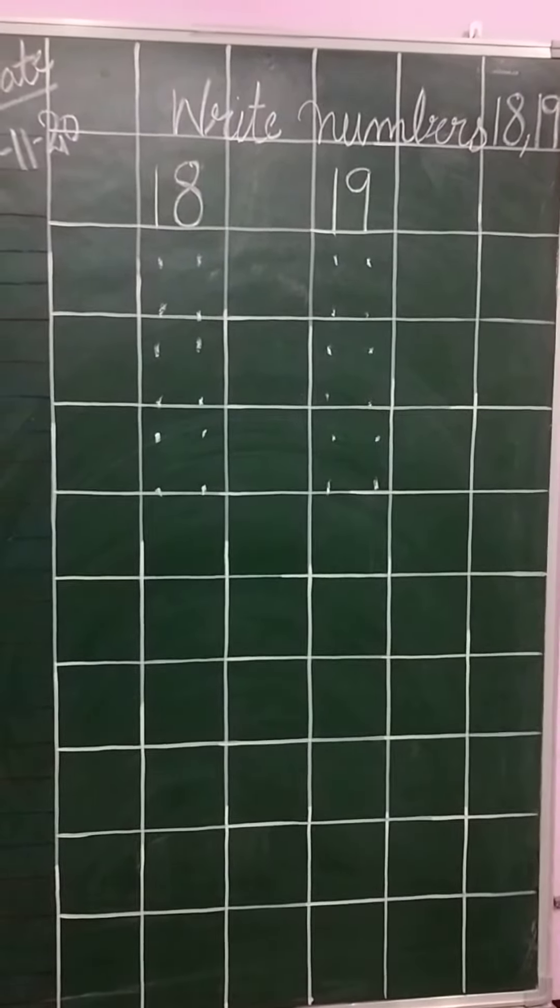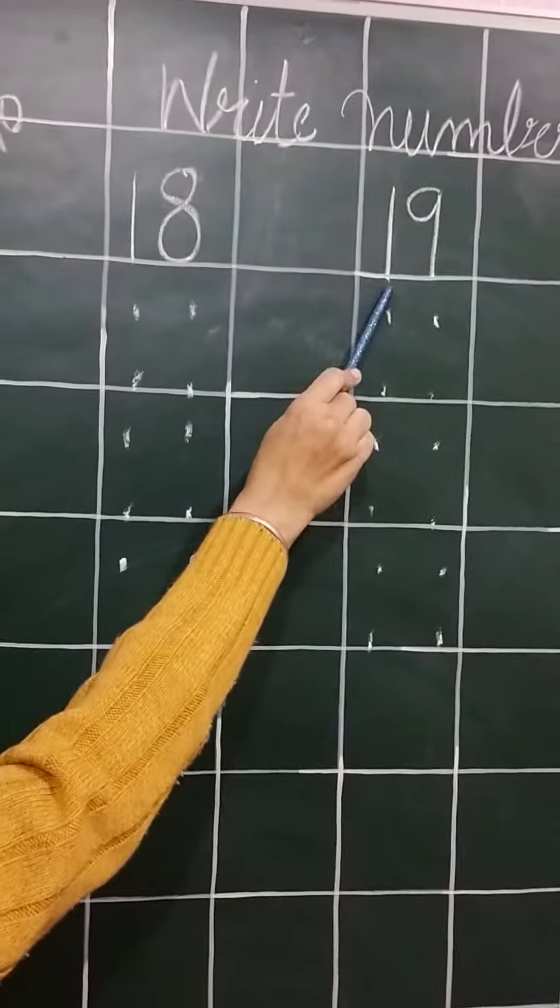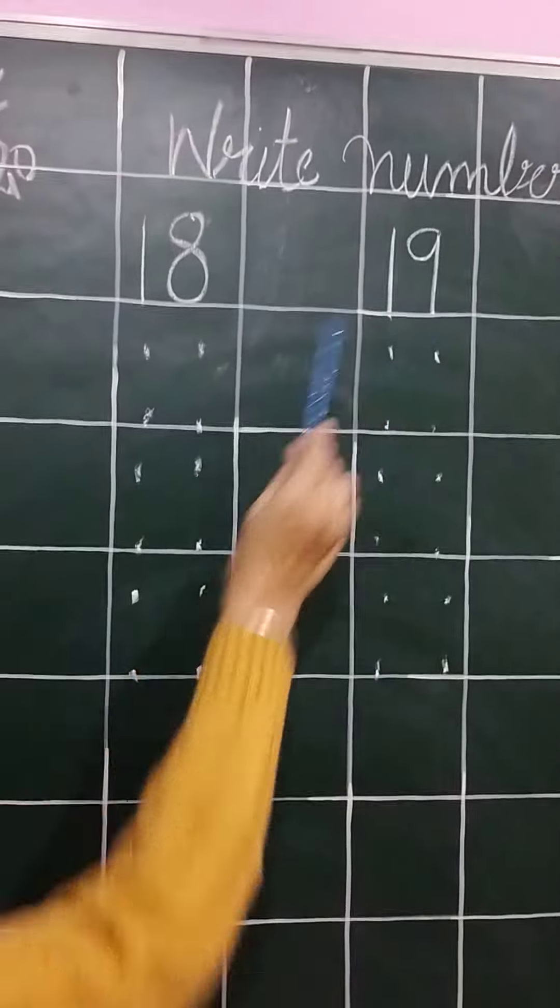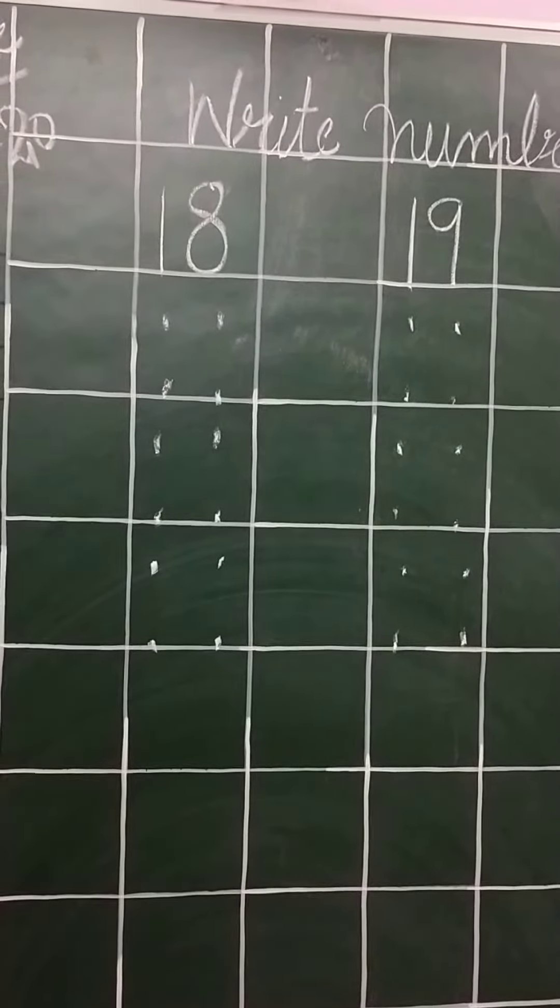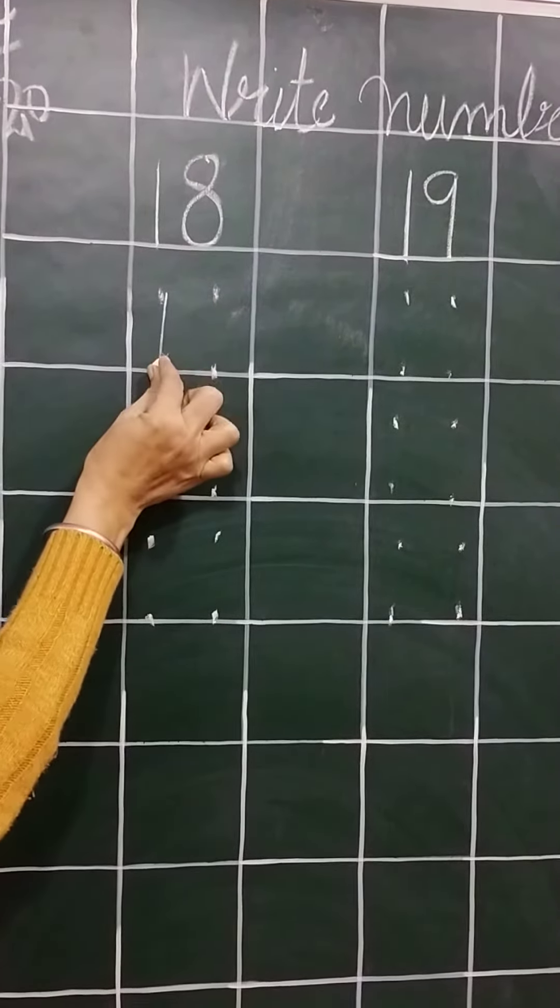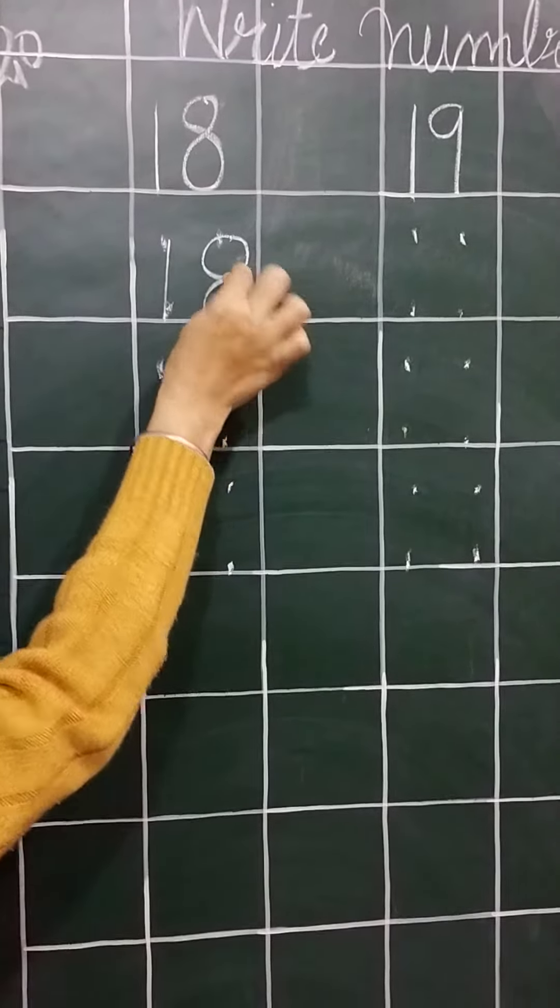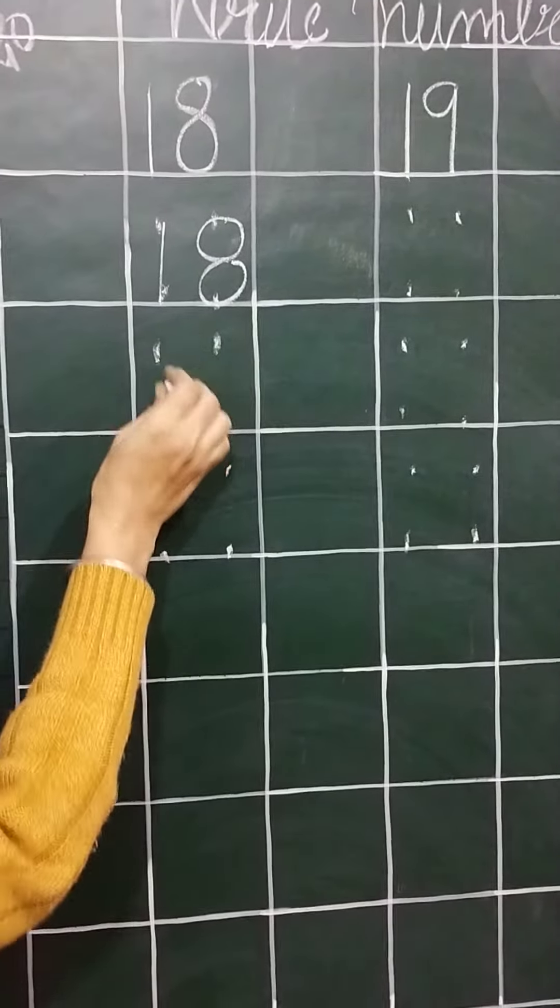Okay beta? Here is 1, 8, 18. 1, 9, 19. If we have done number 17, we have done number 18. Firstly standing line, small circle and another small circle. It will make 1, 8, 18.